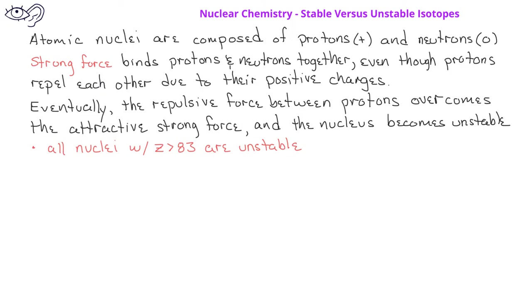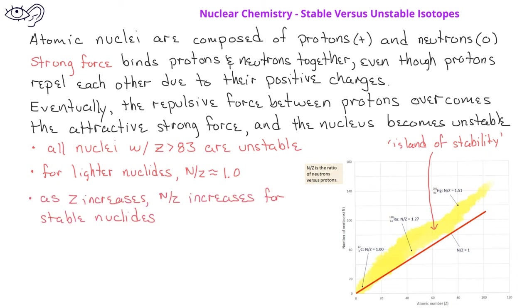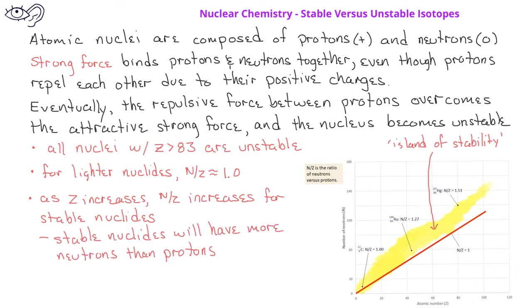Nuclear scientists have observed an island of stability based on the neutron-to-proton ratio for various nuclides, as displayed here in this figure. For lighter nuclides, the neutron-to-proton ratio for stable nuclides is about 1. For example, carbon-12 is a stable nuclide. Once the atomic number is greater than 20, the ratio of neutrons to protons begins to increase for stable nuclides, meaning stable nuclides have more neutrons than protons. When atomic number equals 44, the neutron-to-proton ratio is about 1.275, while for atomic number 80, the ratio is about 1.5.